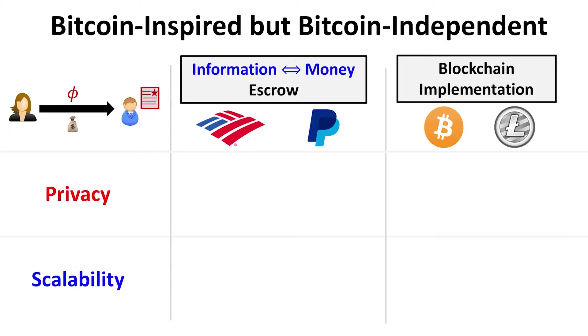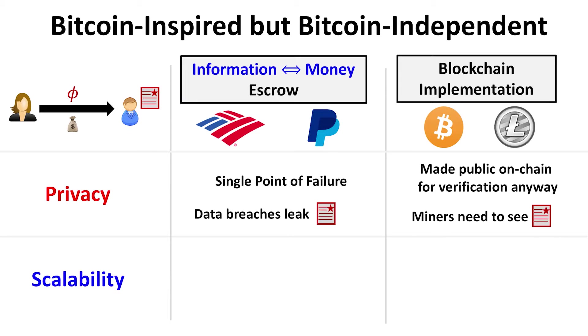Or you could use any blockchain implementation — Bitcoin, Litecoin, Ethereum — most of which support claim or refund transactions. In either case, you have to worry about privacy and scalability. If you're using a pure information-to-money escrow, you're obviously leaking information to the escrow, and a data breach would expose it. On the blockchain, things are worse because miners have to validate conditions, so the information is made public on-chain anyway.